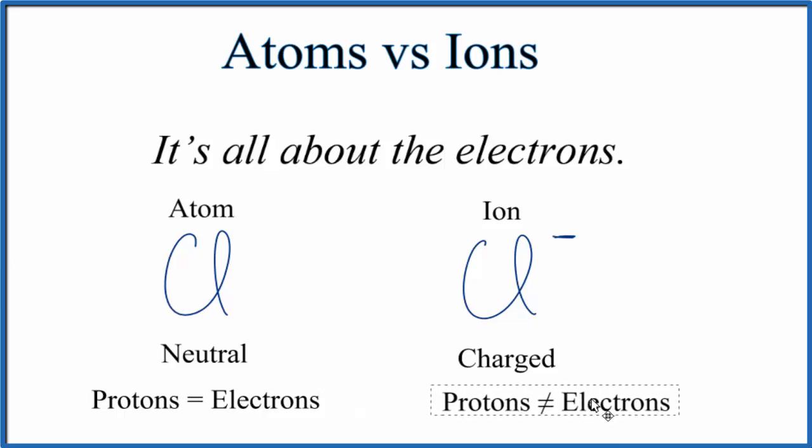And in this case, we say that the protons, they don't equal the number of electrons. We have one more electron than we have protons. So this charge, the difference in electrons, that makes this an ion. So let's see what that really looks like.